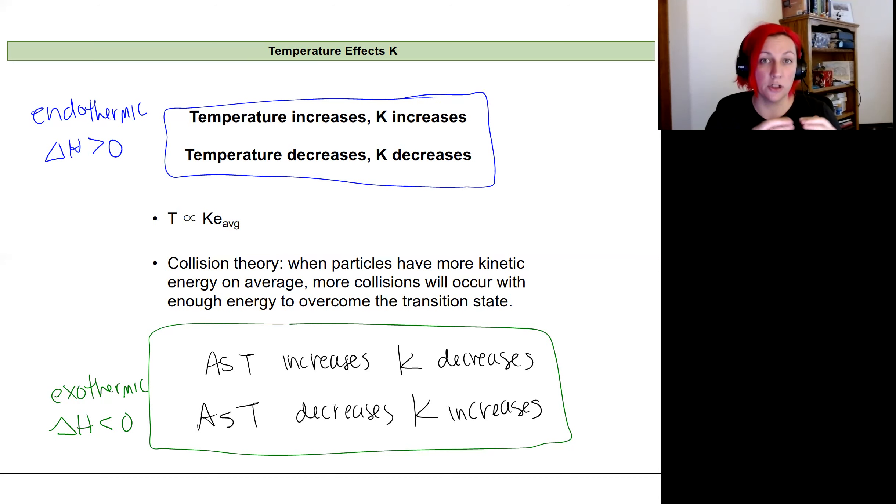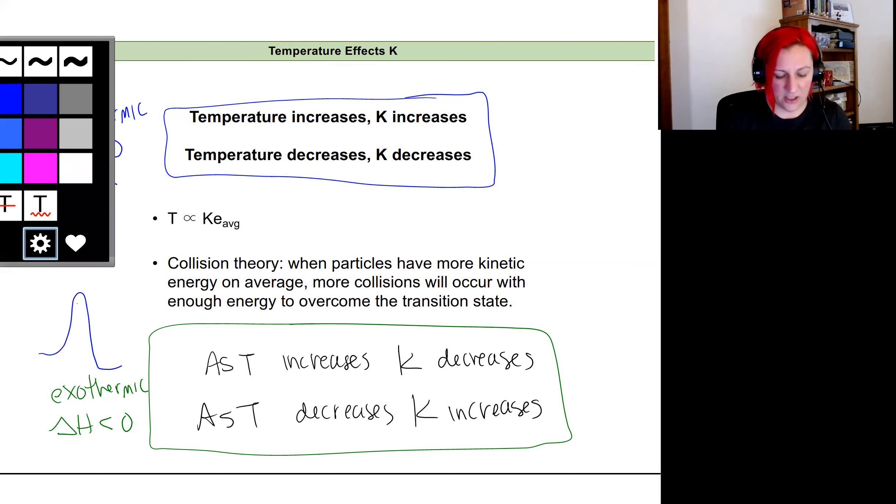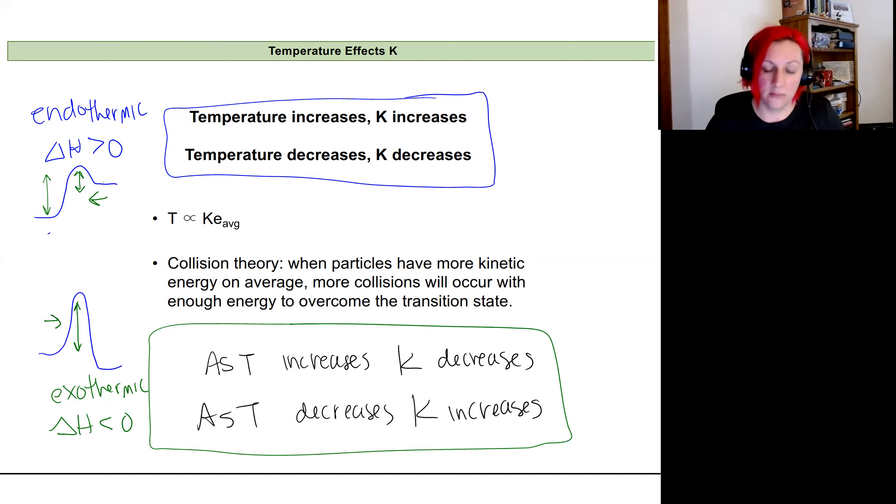Now, this is going to have a larger impact on whichever direction of our reaction has the smaller activation energy. So remember, when we're looking at an endothermic reaction, we have a reaction diagram that looks like this. And so if you think about the reverse reaction, it has a smaller activation energy than our forward direction. And similarly with our exothermic, we have the smaller activation energy in the forward direction. And so that's going to have an impact on that K value overall in how our two different rates are going to be different.